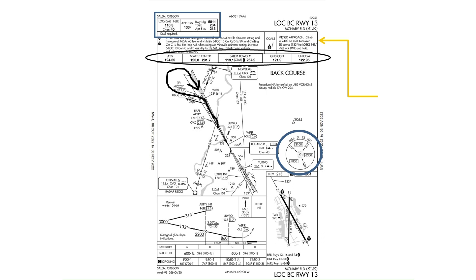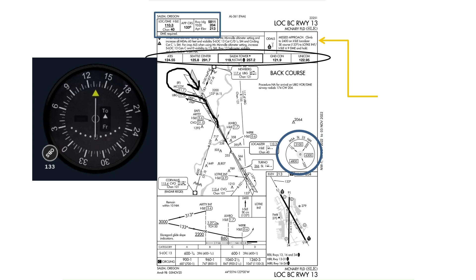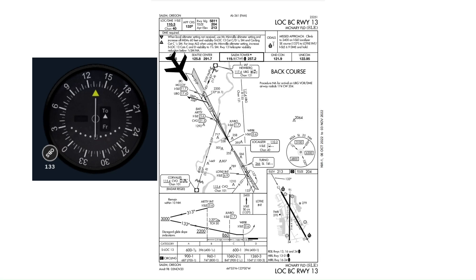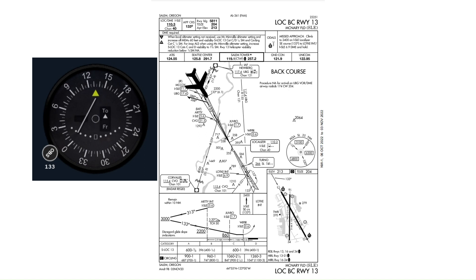Let's take a look at how reverse sensing works using a CDI needle. The CDI needle is turned to a heading of 1-3-3, which is the back course approach for Runway 1-3 at McNary Field in Salem. Notice how the CDI needle deflects to the right when the airplane drifts off course to the right — the pilot would need to fly to the left, away from the needle, to get back on course. When the plane is to the left of course, the needle deflects to the left and the pilot would need to fly to the right, away from the needle.